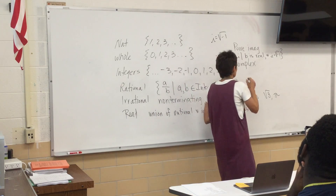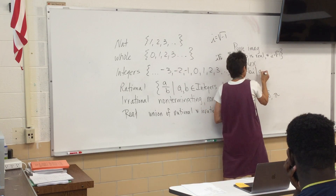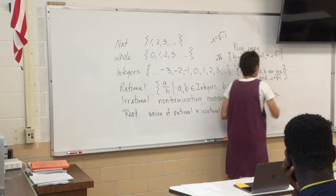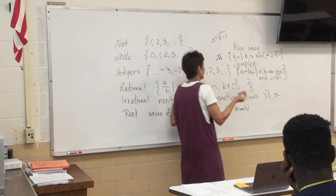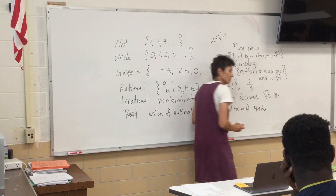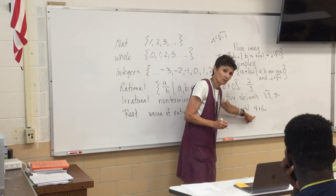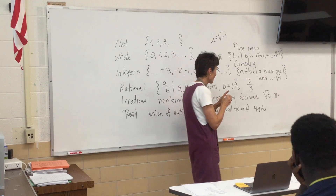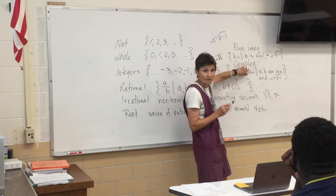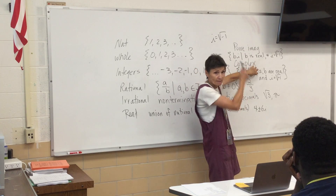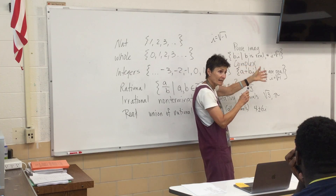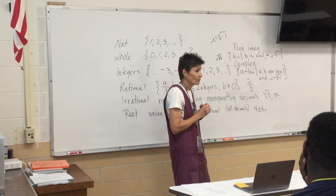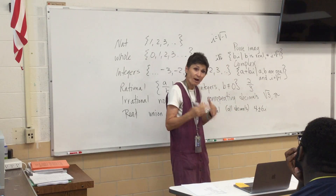A complex number is a plus bi, where a and b are real and i is the imaginary unit. So a complex number is something like 4 plus 6i. Do you remember getting answers like that last year when you did the quadratic formula — like 4 plus or minus 6i? Those are called complex numbers. Complex numbers have two components: A by itself is a real number, bi is a pure imaginary. When you put those together, you get a complex number. All numbers we'll talk about in this class will be some version of a complex number.